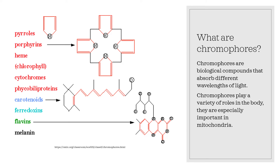Beyond energy metabolism, I also want to discuss some interesting interactions that mitochondria have with light. To understand this, you need to understand the role of chromophores. A chromophore is essentially any compound that absorbs specific wavelengths of light, and these can be used in a variety of ways in the body. One of the best examples is in photoreceptors — the receptor proteins that allow you to see. A compound called retinol, which is a vitamin A analog, absorbs light and is actually excited, its structure altered slightly as a result, causing a signal to be sent to the nervous system, allowing you to see.